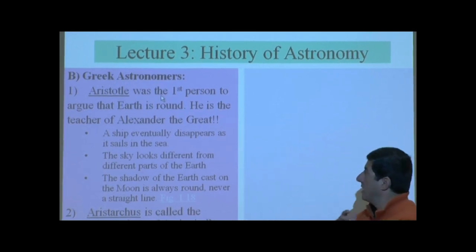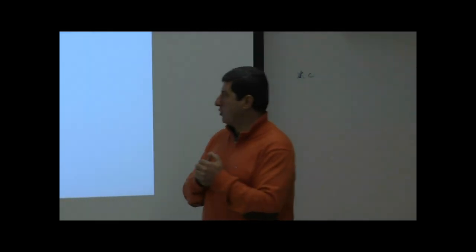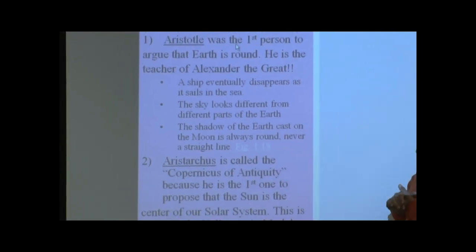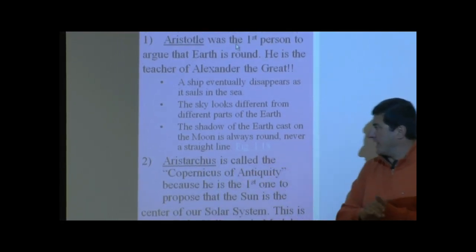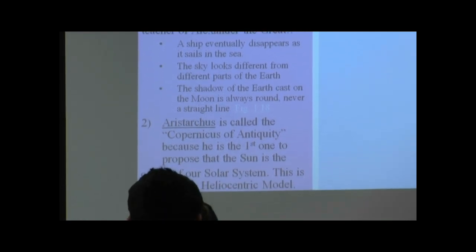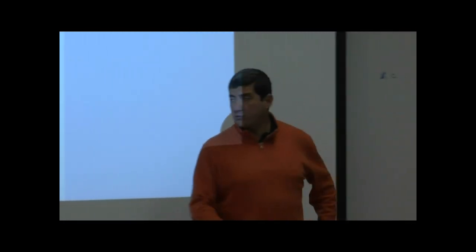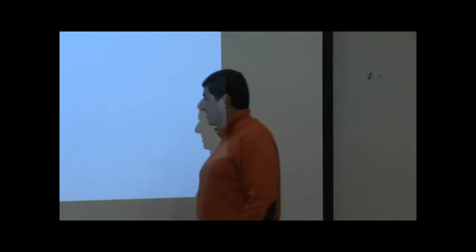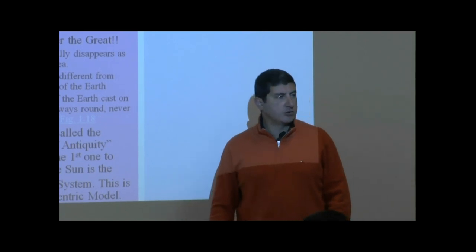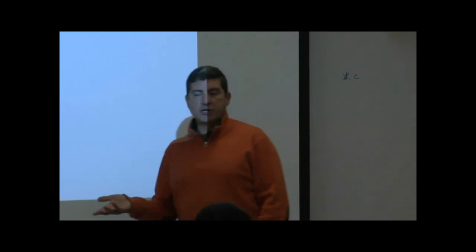We continue here on Lecture 3. Remember, we were covering some of the main people involved in the history of astronomy. We got to the Greek astronomers, talked about Aristotle and his contribution. So now we have another person, Aristarchus. It sounds like Aristotle. Aristarchus is called the Copernicus of Antiquity, which means the ancient Copernicus. Why? Because he is the first one to propose that the sun is the center of our solar system. And this is called the heliocentric model. Helios means sun.